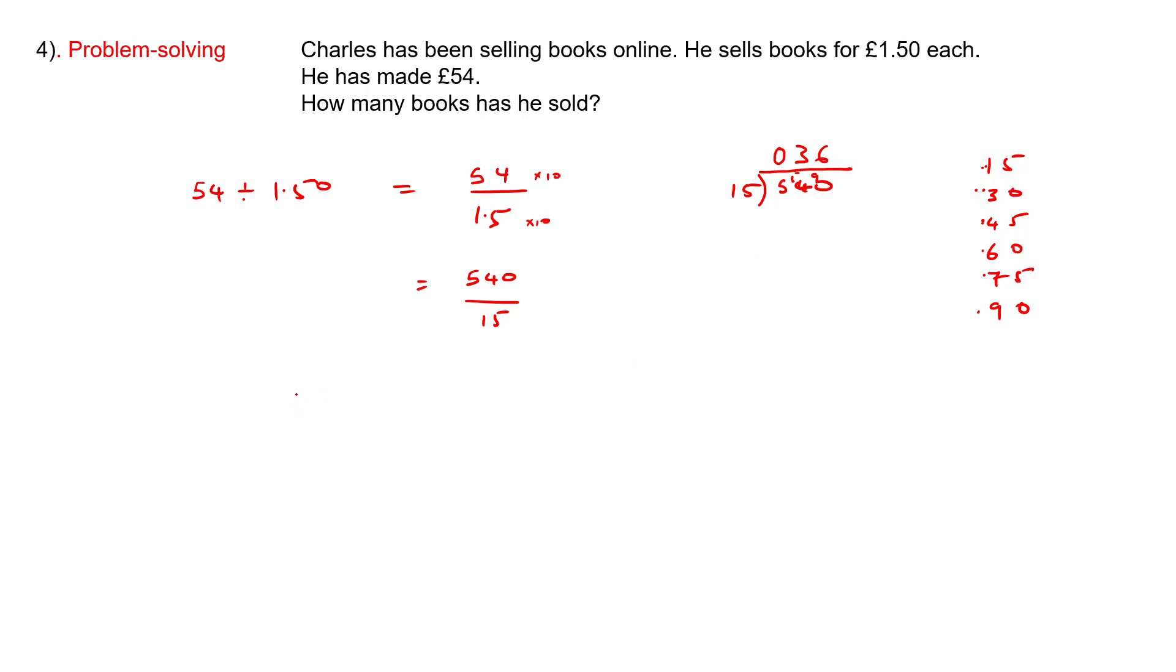15 into 90 - that's one, two, three, four, five, six. Six times. So he has sold 36 books.